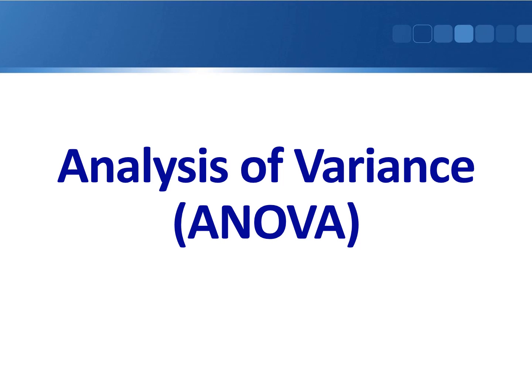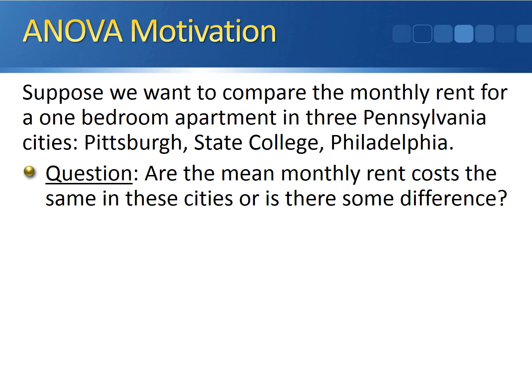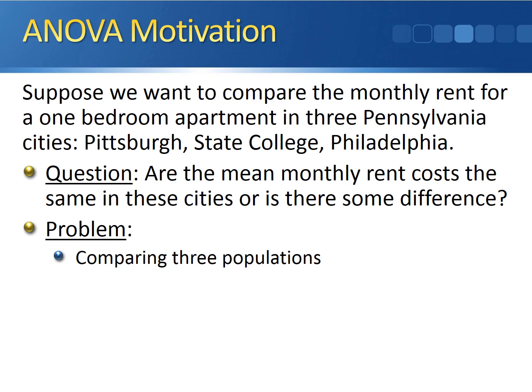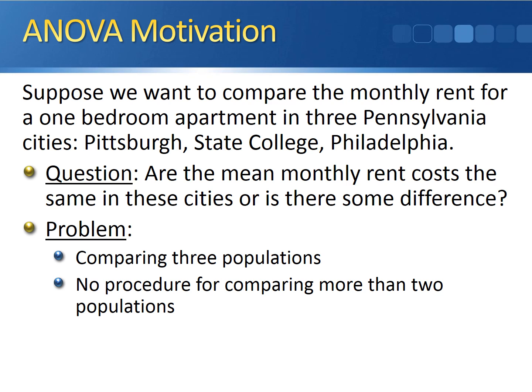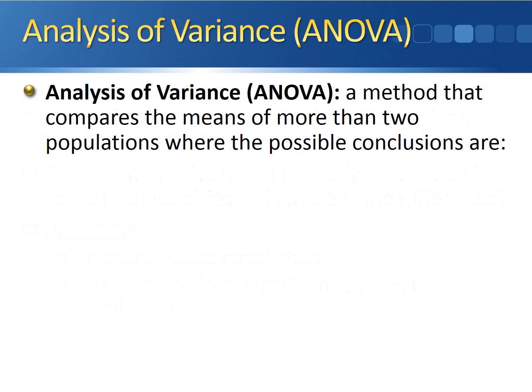This video is going to teach you the basics of analysis of variance, otherwise known as ANOVA. Here's the example we're going to work with throughout this video. Suppose we want to compare the monthly rent for a one-bedroom apartment in three Pennsylvania cities: Pittsburgh, State College, and Philadelphia. We want to know if the mean monthly rent costs are the same in these three cities, or if there exists some difference between them. The problem is that we're comparing three populations, and we don't yet have a procedure that can compare more than two populations. This is where ANOVA comes in.